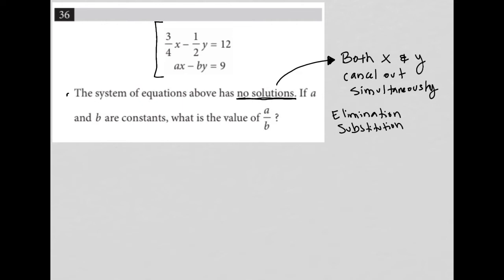What I'm basically saying is with either of these methods, if both x and y cross out or cancel out simultaneously, then this system has no solutions. That's the state you'd be in—there'd be no solutions for that system of equations.